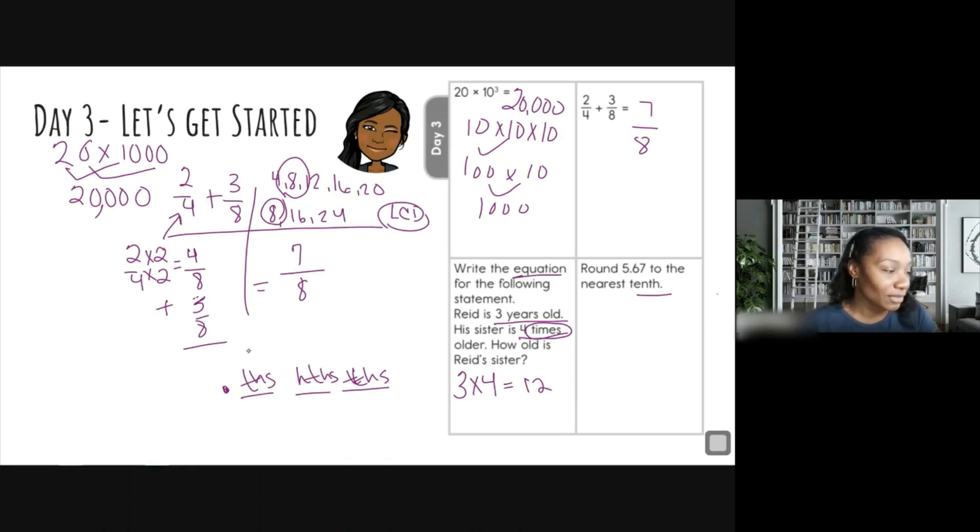So we have our tenths, right? You have your tenths place, your hundredths place, and your thousandths place, right? A different way so you can see it. We're rounding to the tenths place. So five and 67 hundredths, which number is in the tenths place? You need to know that first. So again, tenths, hundredths, thousandths. The six is in my tenths place. I like to underline the number that the question is asking for, and then I'm going to circle that number there to the right.